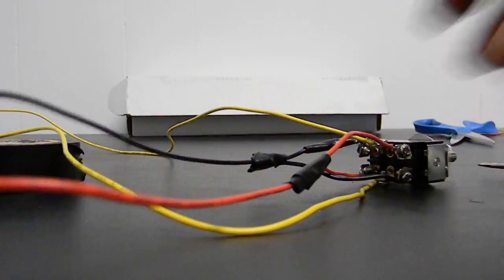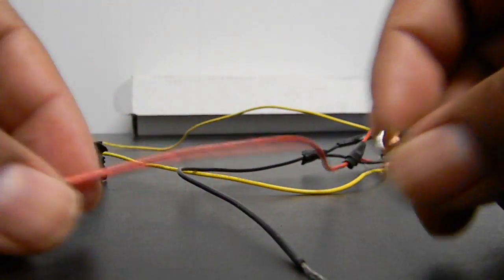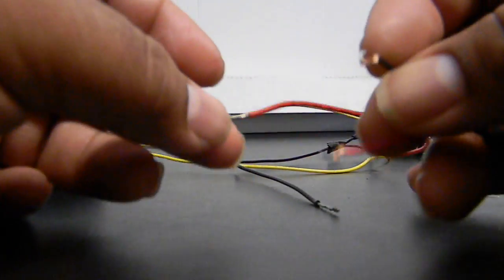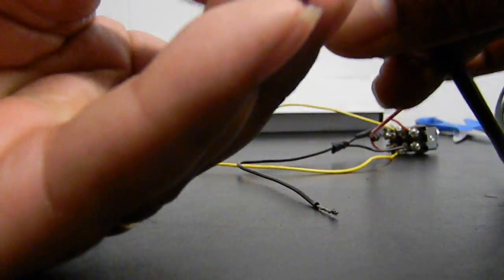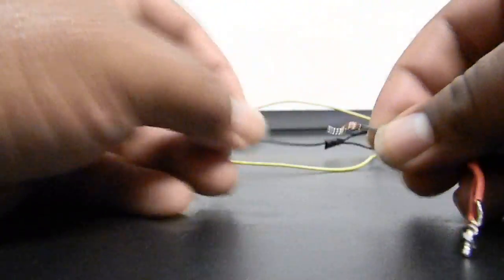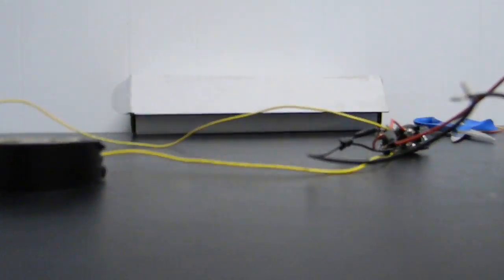Okay, now what I'm going to do is take this here positive and negative of the actuator and wire it to my positive and negative connection that's on my three-way toggle switch. Wire those together. Okay, wire these together and it looks like this.